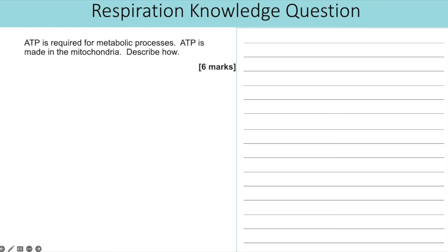We then go on to this six marker, knowledge questions still, and we're asked to describe how ATP is made. But specifically we're told first of all ATP is required for metabolic processes. ATP is made in the mitochondria. Describe how? Now ATP isn't just made in the mitochondria. It is actually made in the cytoplasm as well. But what this question is specifically focusing on is how is the ATP made in the mitochondria? So that means you can only talk about the link reaction, the Krebs cycle, and oxidative phosphorylation. We can't talk about glycolysis because that happens in the cytoplasm, not in the mitochondria.